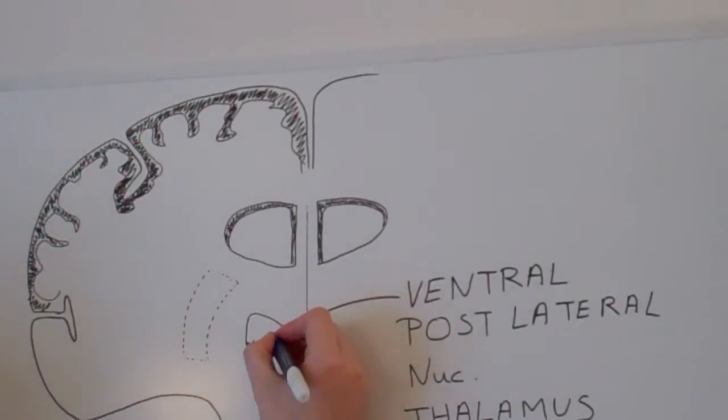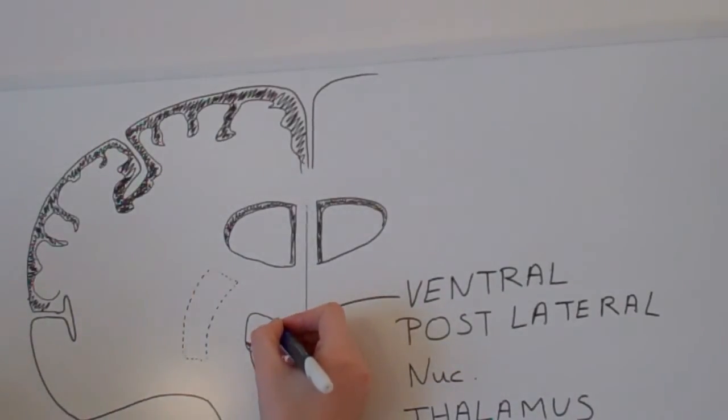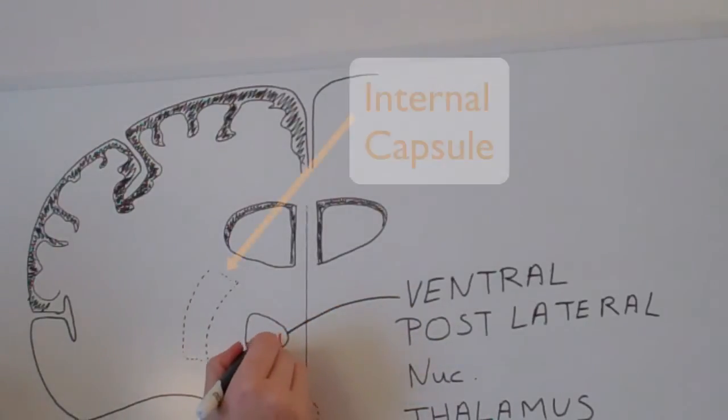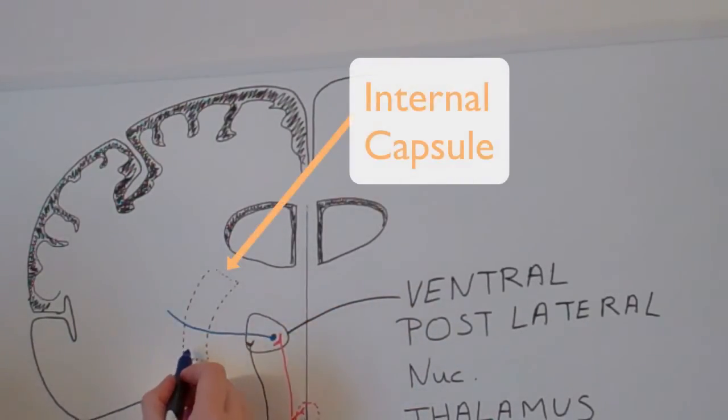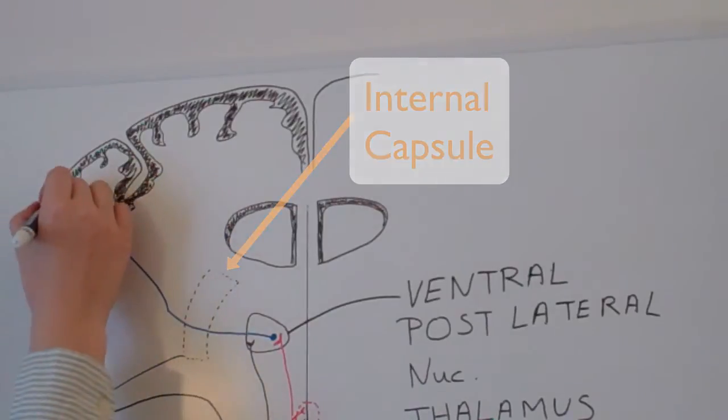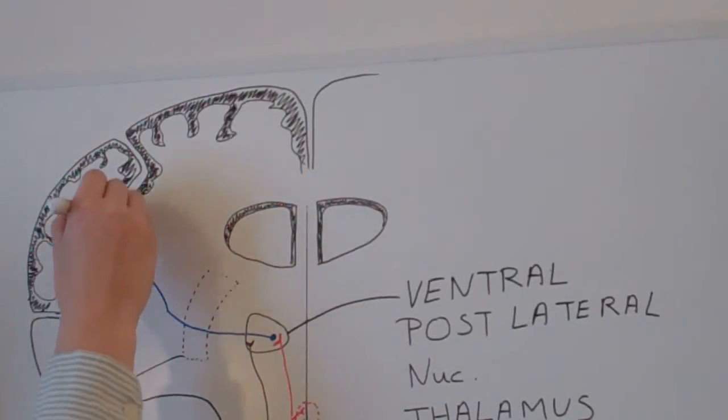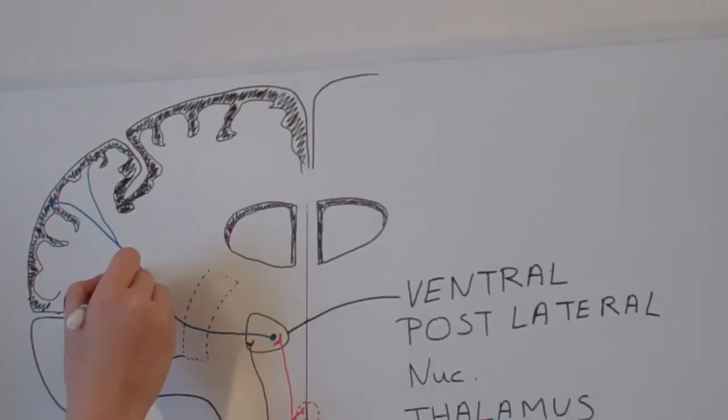The third level. The tertiary neurons send their axons through the internal capsule, then through the corona radiata, and eventually synapse on the post-central gyrus, or in the secondary sensory cortex.